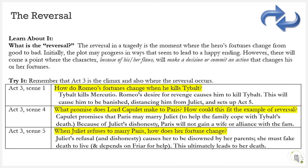The reversal in a tragedy is the moment where the hero's fortunes change from good to bad. When we think about the reversal, we should think about the climax. That leads us back to Act 3. Tybalt kills Mercutio. Romeo's desire for revenge causes him to kill Tybalt, and this will cause him to be banished, distancing him from Juliet, which sets up all the tragic events of Act 5. In Scene 4, Capulet promises that Paris may marry Juliet to help the family cope with Tybalt's death. Because of Juliet's dishonesty, Paris will not gain a wife or alliance with this family. And finally, by Scene 5, we see Juliet's refusal and continued dishonesty causes her to be disowned by her parents. She must fake her death to live, and she depends on the friar for help. This ultimately leads to her death.